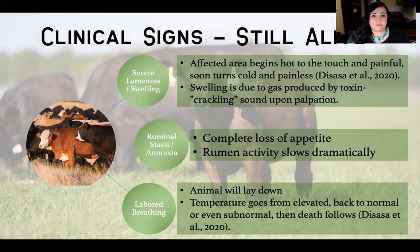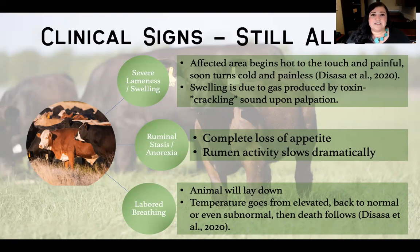We'll also observe ruminal stasis and anorexia — that animal has a complete loss of appetite, and if there is any rumen activity, it's very slow. Then we will see labored breathing. If the lameness had not brought them to the ground, the labored breathing definitely will. We'll also see a heightened temperature, and as that animal starts to expire, we will see that temperature start to decrease and become subnormal as death approaches.